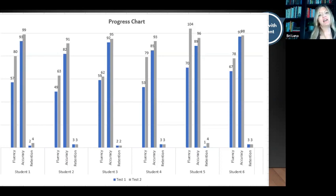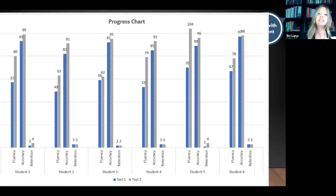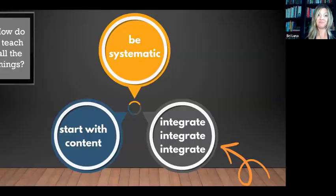The blue line of my graph is the first day read and the gray line is the second day read. This wasn't the same day — it wasn't a rehearsed passage. Within one day, with a nine-minute background lesson about nature preserves, all of my kids grew significantly in accuracy and fluency, and most of them grew in their retell. One student went from a quality of response of a one to a four. Background knowledge is important.